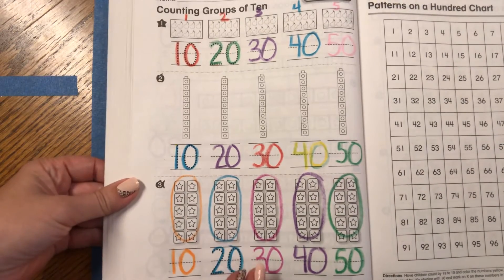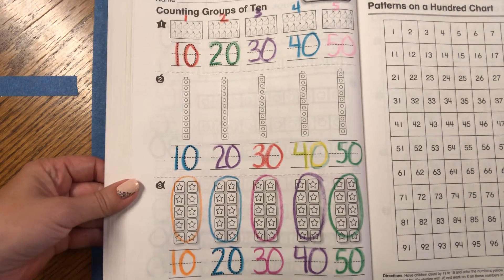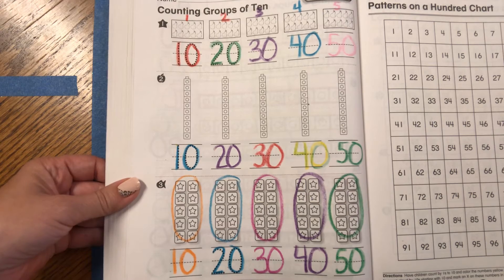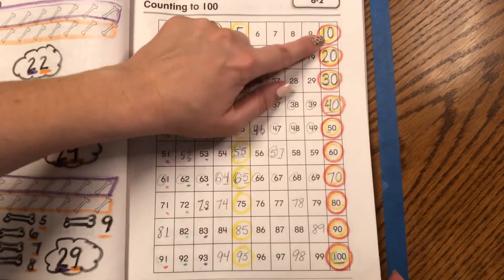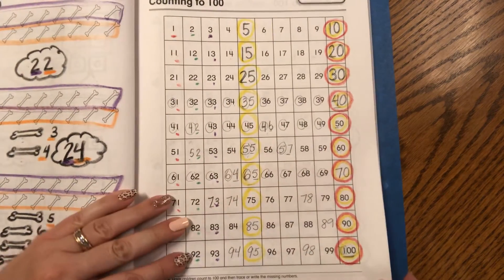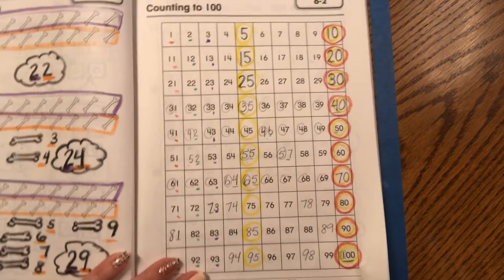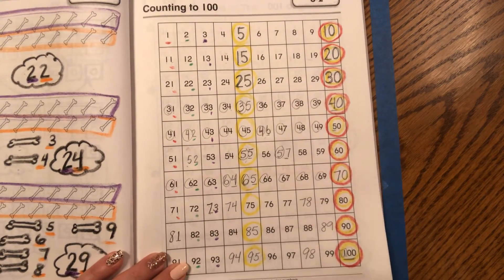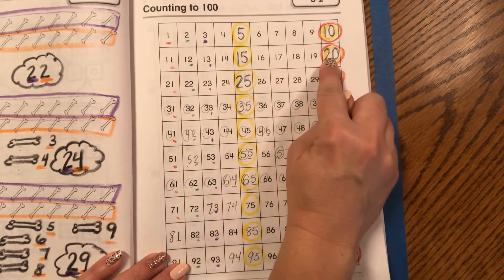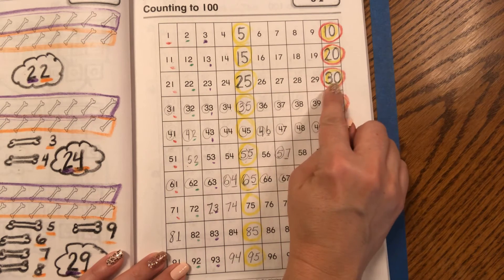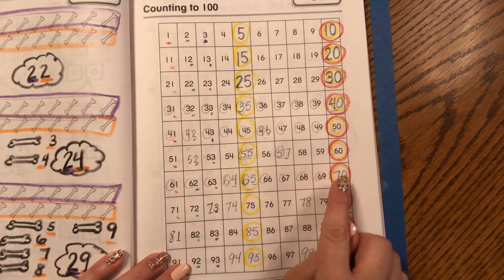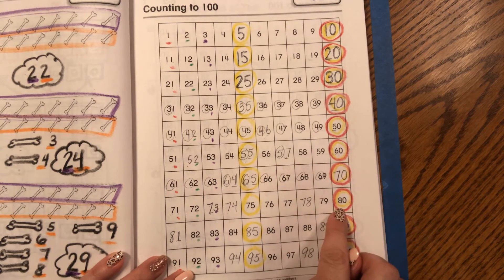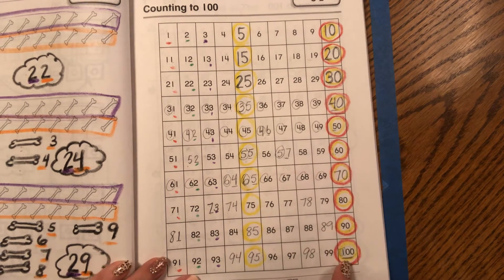We can even look back at our 100 chart that we've done before, and we can count to 100. So do you remember when we did 6-2 and we circled our 10s in red? Let's practice counting by 10s really quickly so we get really comfortable. 10, 20, 30, 40, 50, 60, 70, 80, 90, 100.